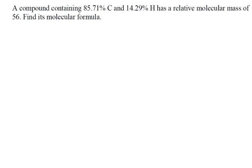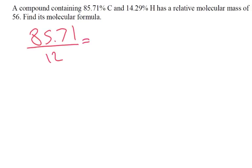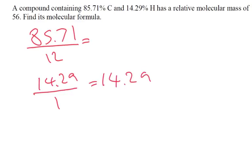A compound contains 85.71% of carbon and 14.29% of hydrogen, and it's got a relative molecular mass of 56. Find the molecular formula. Same technique — convert your percentages into grams and work out the number of moles. So 85.71 divided by 12, and 14.29 divided by 1. For carbon, 85.71 divided by 12 gives us 7.1425.